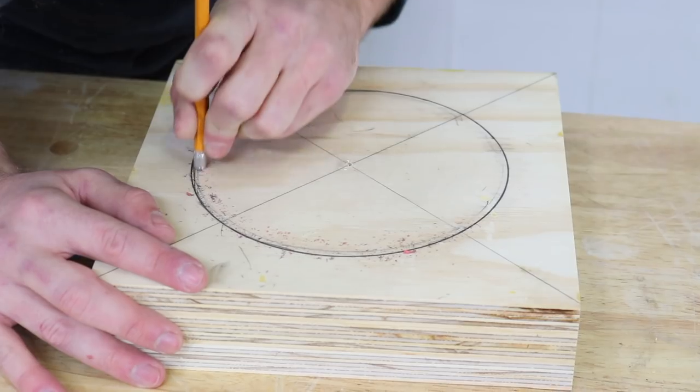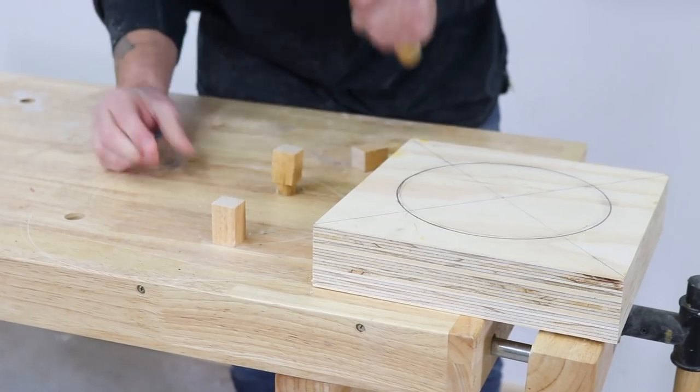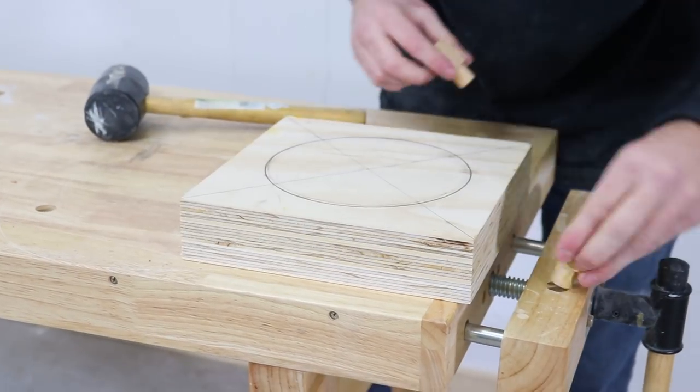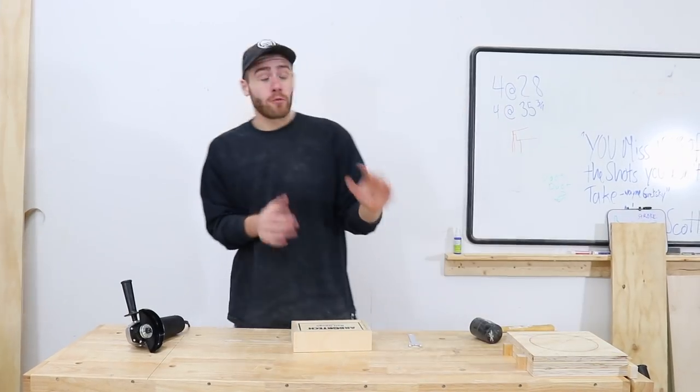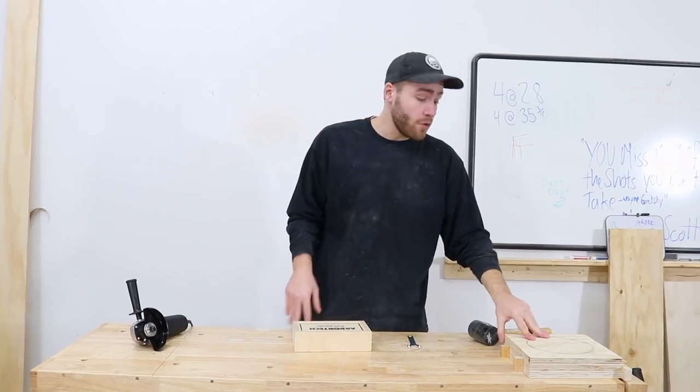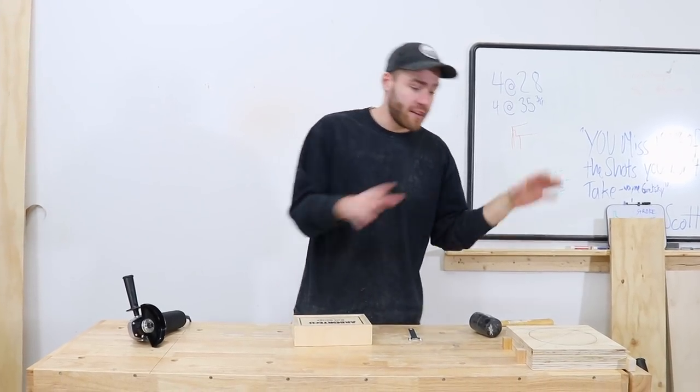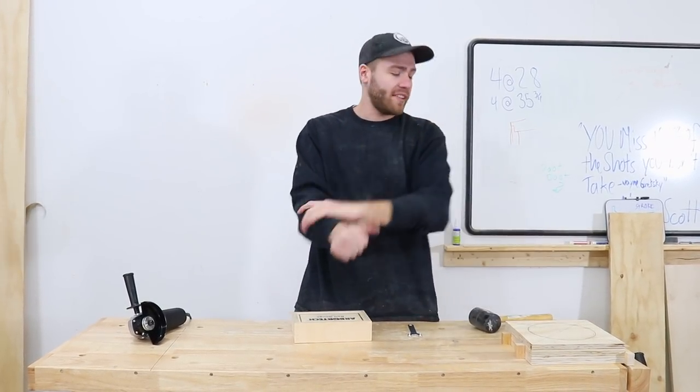Whenever you're working with hand tools whether they're powered or not you want to make sure you have both hands available to hold the tools. So I clamped up the piece in the vice on my workbench. You want to make sure that this is really secure because if this block can move that makes this whole thing dangerous. If it can't move you should be pretty safe.